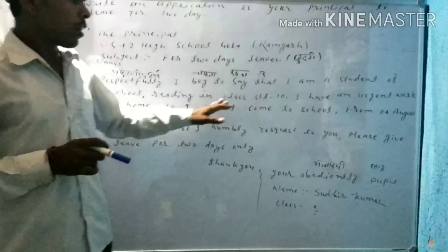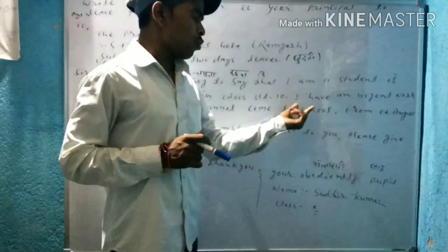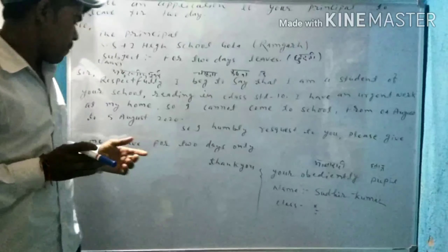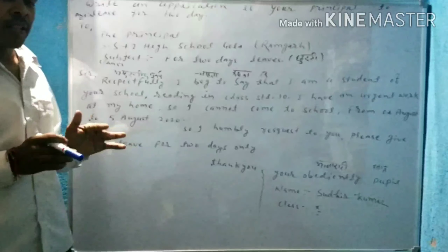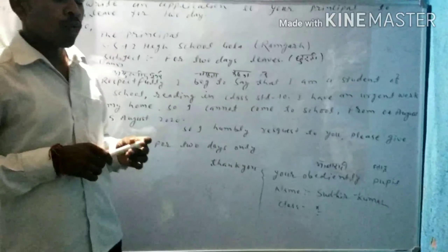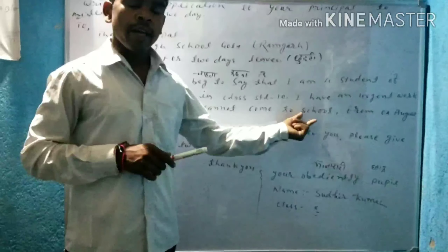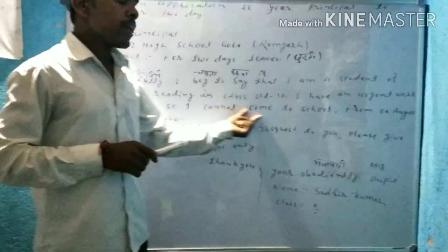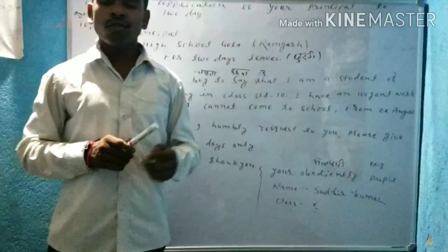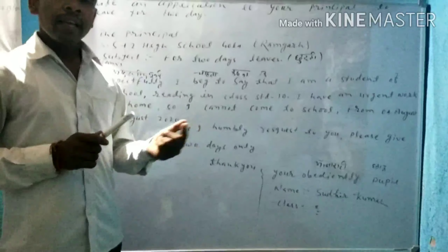जो कि reading in class standard 10 — यानी मैं class 10 में पढ़ रहा हूँ। 'I have an urgent work at my home' — मेरे घर में एक बहुत ही अत्यंत जरूरी काम है। 'So I cannot come to school from 4th August to 5th August 2020' — इसलिए मैं 4 अगस्त और 5 अगस्त, दो दिन स्कूल नहीं आ सकता।